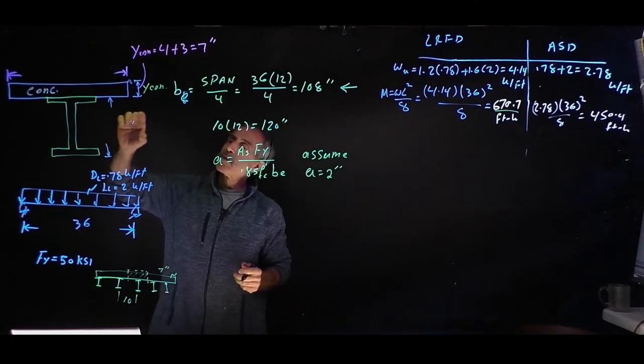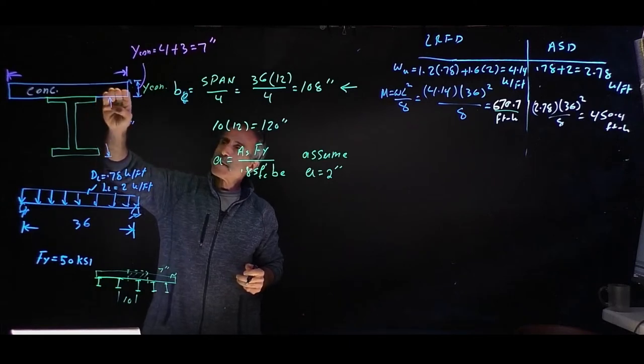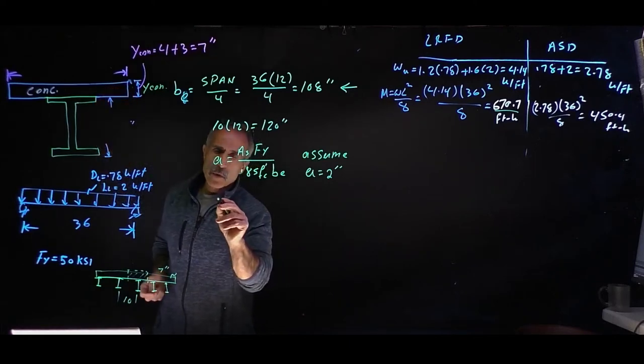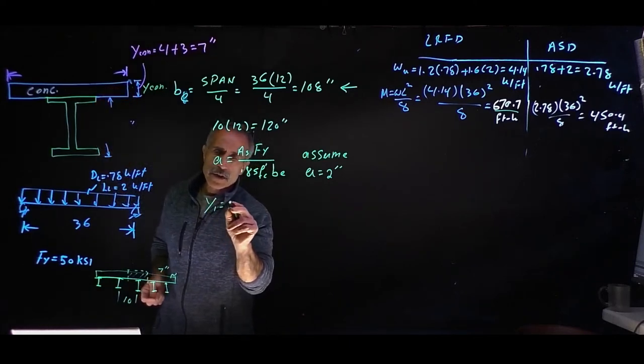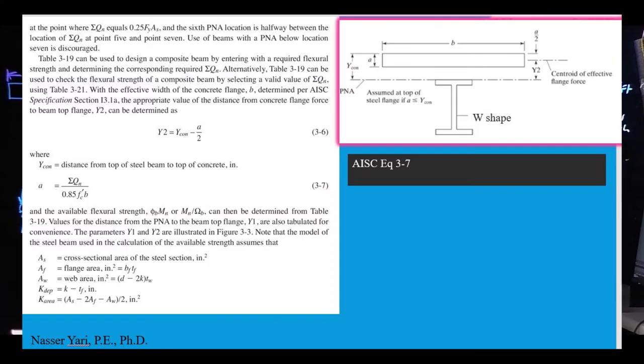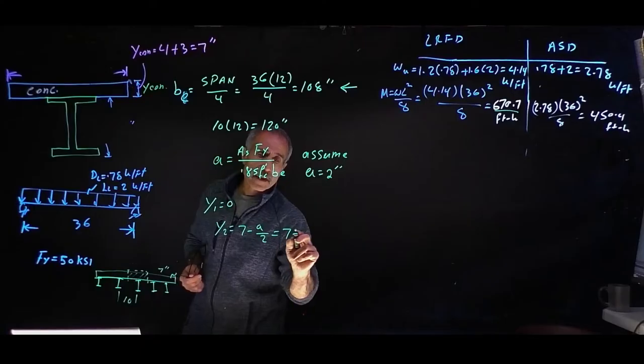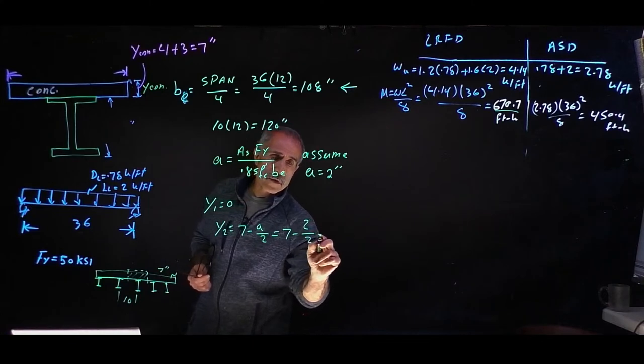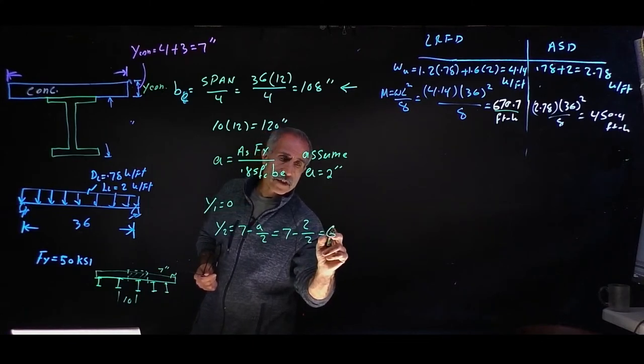Since we know our neutral axis is in the concrete, Y1 equals 0, and Y2 equals the total thickness minus a divided by 2, which is 7 minus 2 divided by 2, and that comes out to 6 inches.